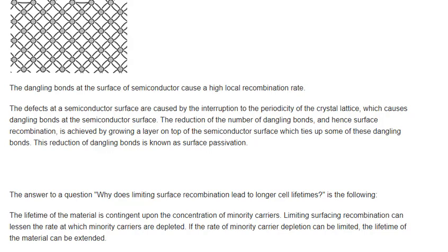The answer to the question — why does limiting surface recombination lead to longer cell lifetimes — is the following: the lifetime of the material is contingent upon the concentration of minority carriers. Limiting surface recombination can lessen the rate at which minority carriers are depleted. If the rate of minority carrier depletion can be limited, the lifetime of the material can be extended.